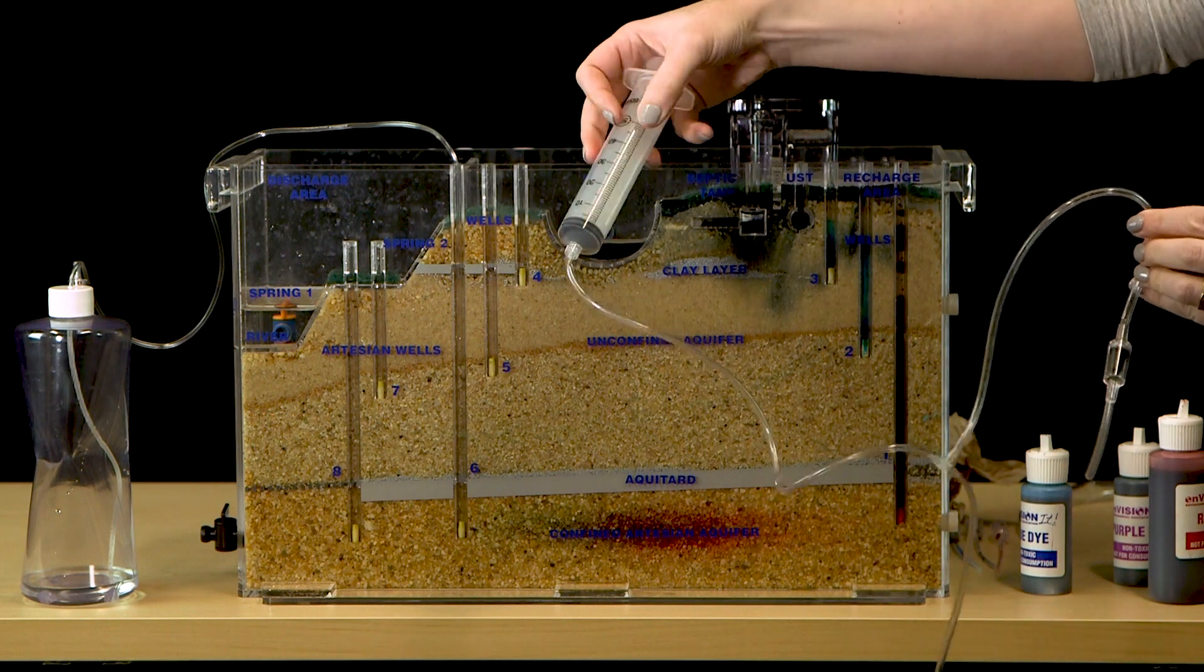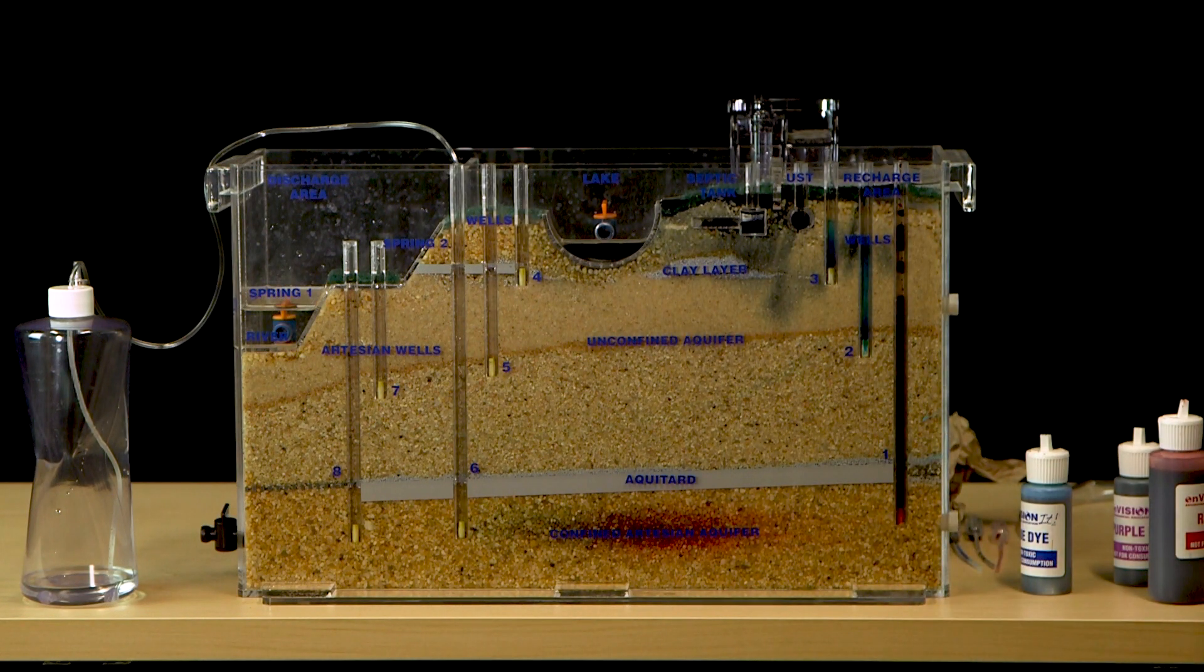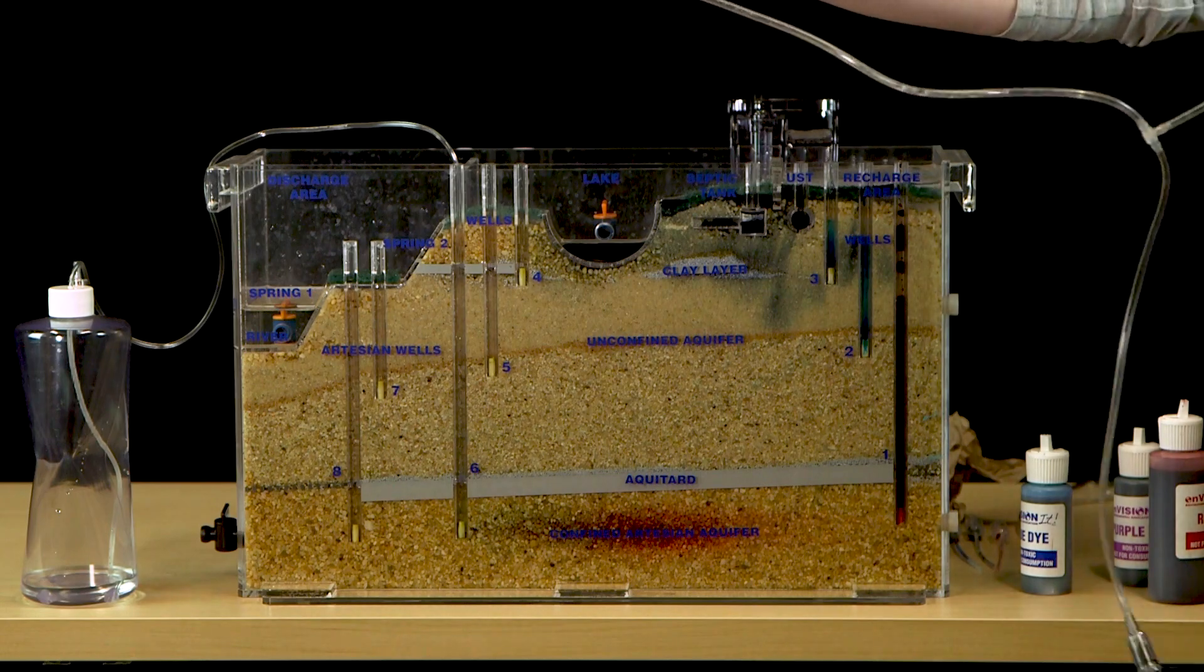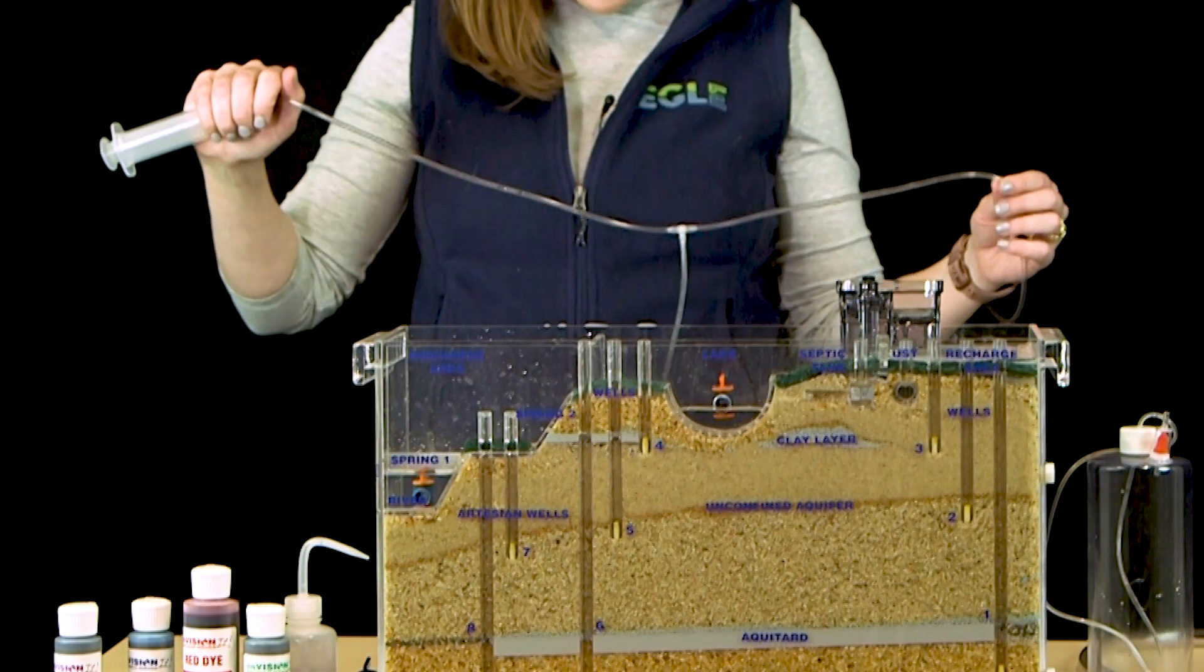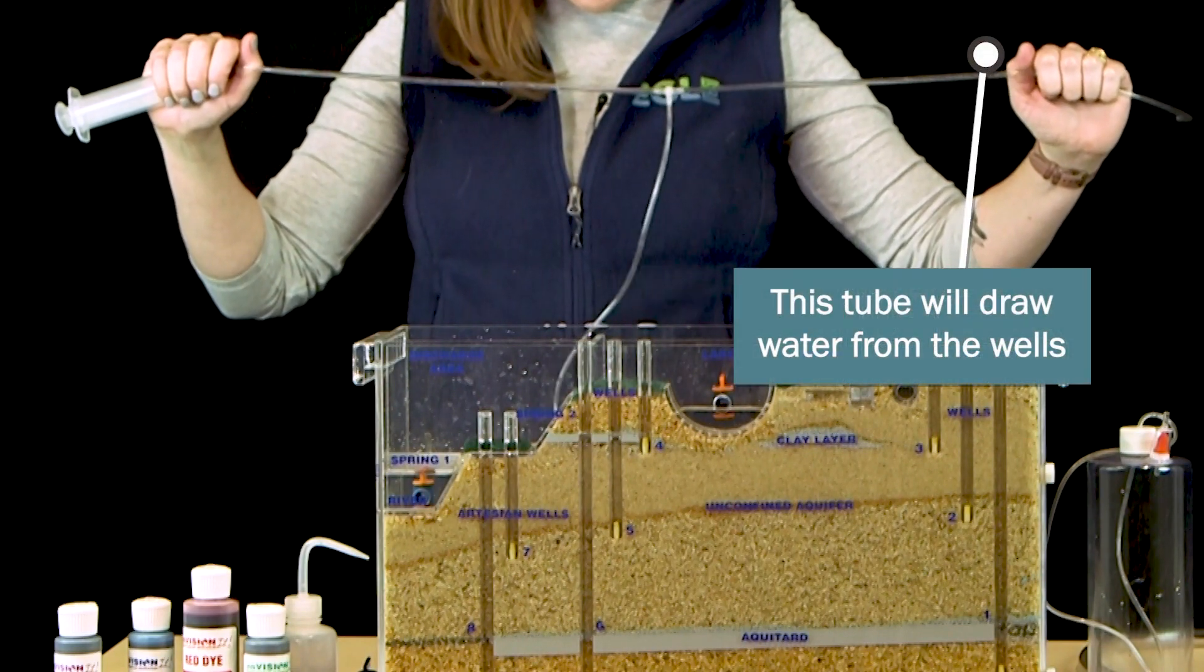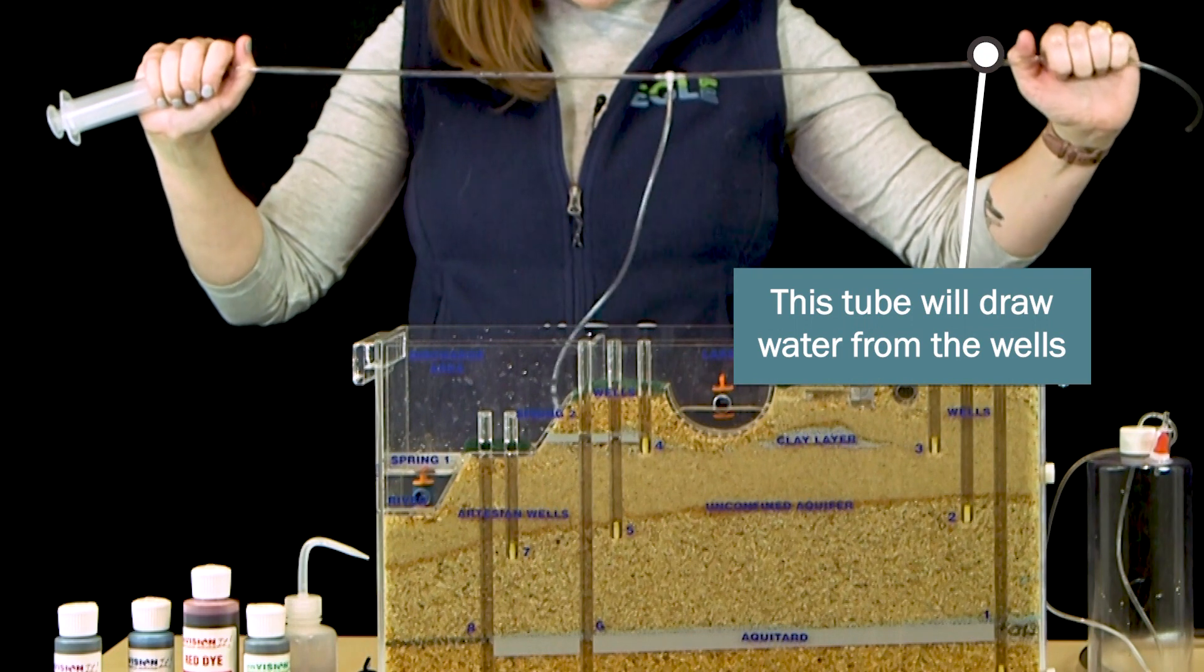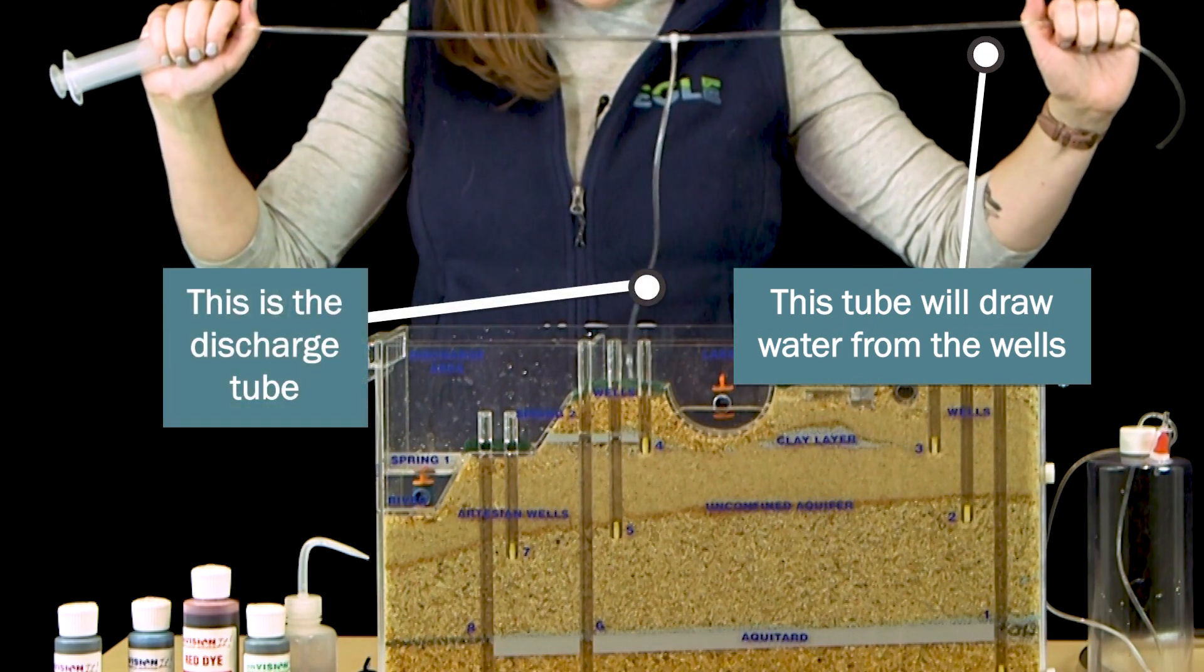The high-volume pumping device can be used to illustrate major water withdrawals or ways of cleaning up contaminated wells. To use this device, first evaluate the direction of the two tubes coming off the syringe. Hold the syringe in one hand and the tubing that comes straight off the syringe in the other hand. The tube that comes straight off the syringe will draw water from the wells, while the tube that hangs down perpendicularly is the discharge tube.